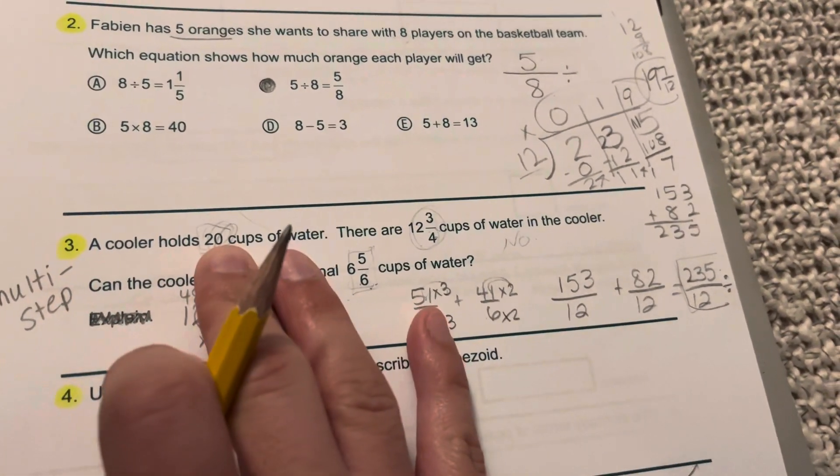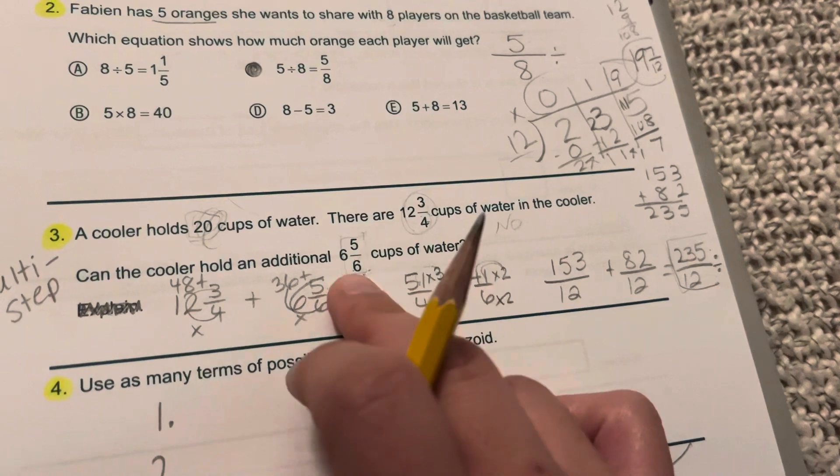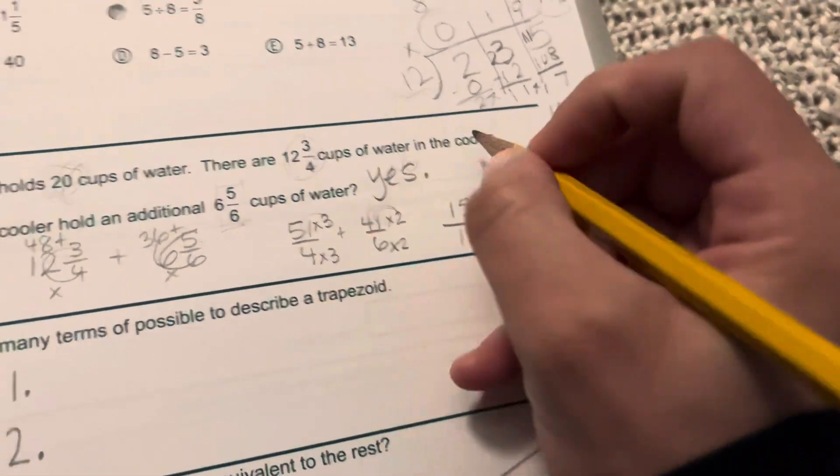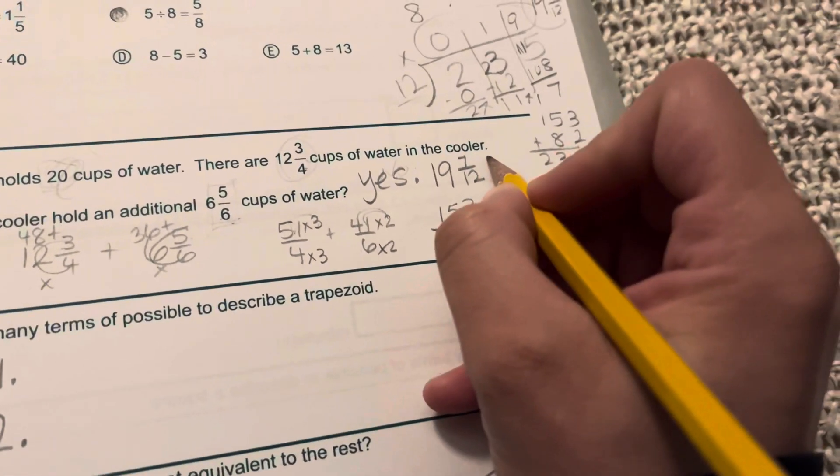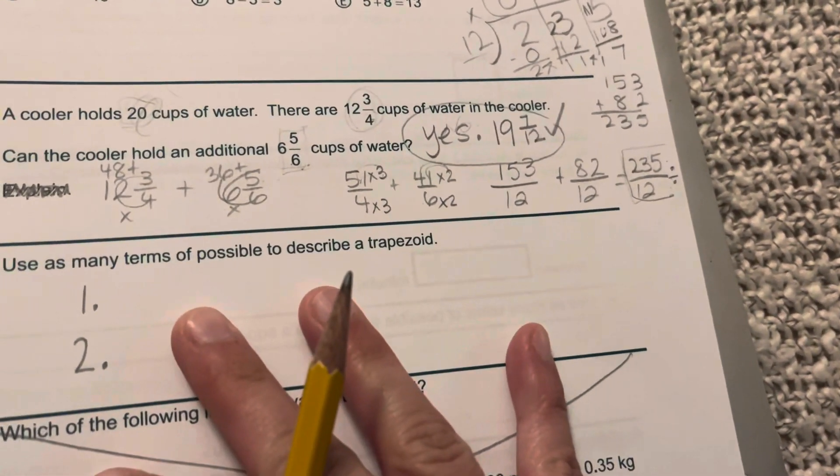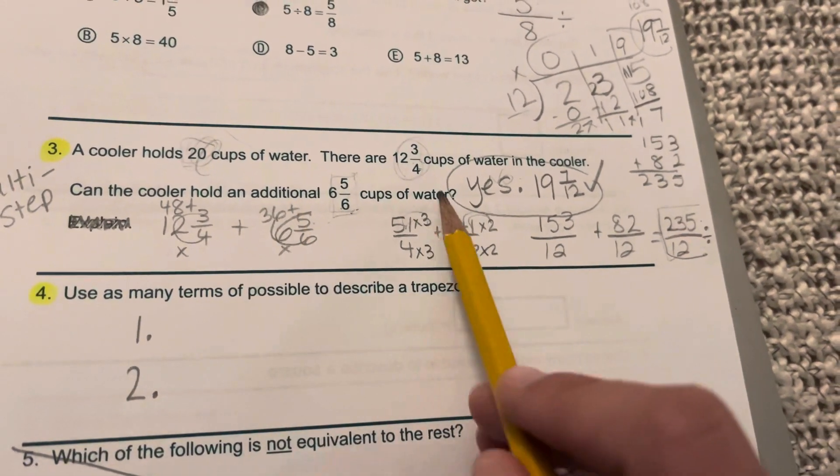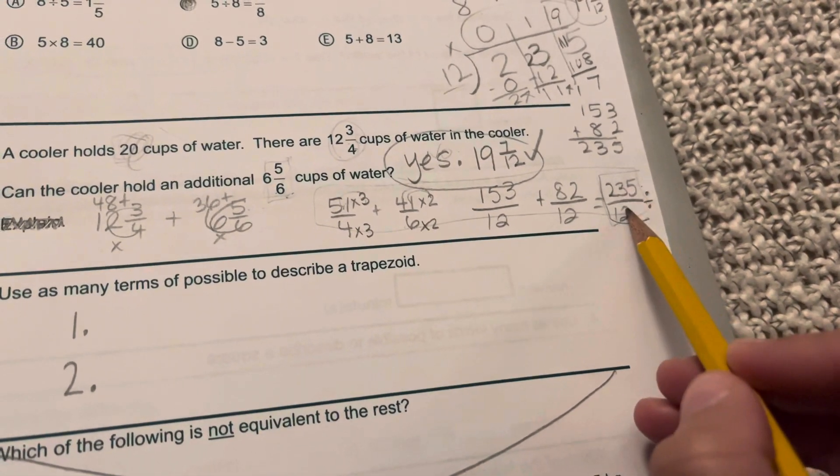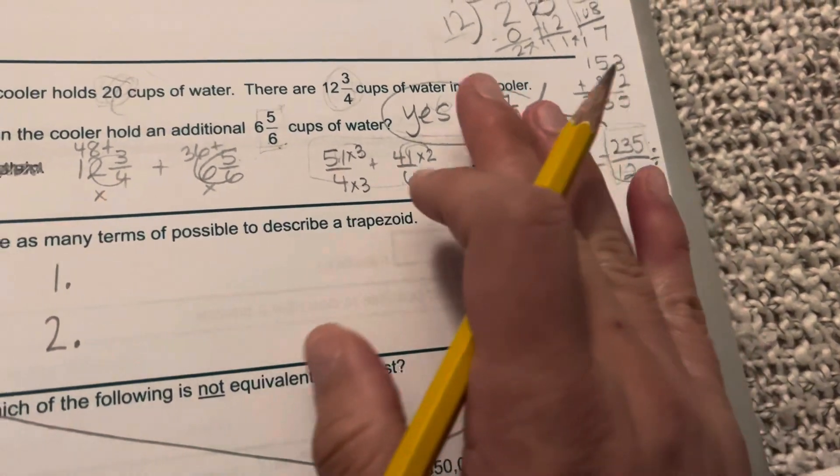It's a lot of work. This said a cooler holds 20 cups of water. There are 12 and 3 fourths cups of water in the cooler. Can the cooler hold an additional 6 and 5 sixths cups of water? Yeah, it actually can. Because when I added those numbers together, those two numbers get me 19 and 7 twelfths. And 19 and 7 twelfths is less than 20. So yeah, it can hold that much more water. Now, that's a lot of work. If you have nothing, I'm asking you to write this part down and to show yourself that 235 divided by 12 is going to get you 19 and 7 twelfths. But I do want you to show me. It does work.